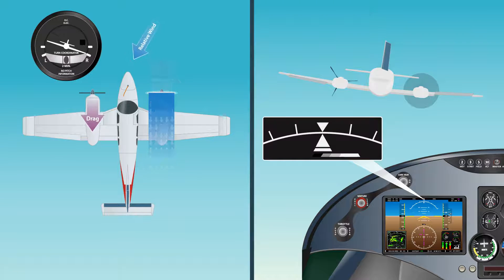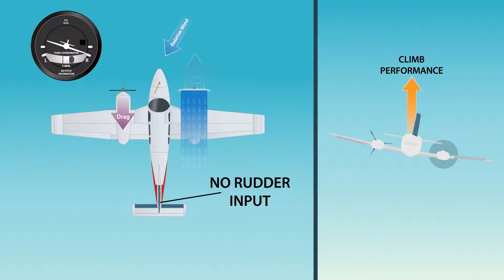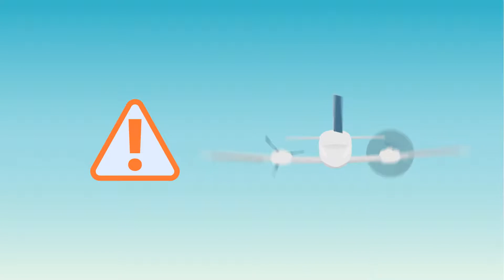If we were to use ailerons alone in a one engine inoperative situation, it would require an eight to ten degree bank angle toward the operative engine. This assumes no rudder input and the ball is displaced well towards the operative engine. Climb performance is greatly reduced by the large sideslip toward the operative engine. This should not be demonstrated in the aircraft due to the increased risk of loss of control.